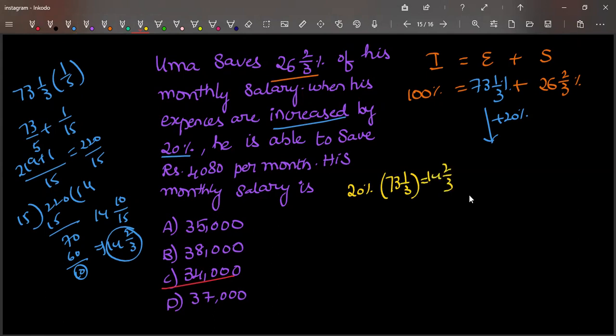So now we need to add this 14 2/3 to 73 1/3. So now we need to change it, 73 plus 14, 87, and 2/3.